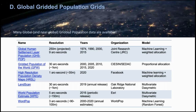Thanks very much. Glad to be here today. I'm going to talk a little bit about the list of global grids you see on the screen here, and we're going to dive a little deeper for each. My name is Greg Yetman — I'm a geographer at CIESIN and have been working with gridded population data since the early 2000s. Here on the screen we have a table showing the different global data sets, and one of the most common questions is: how do I choose which data set to use for my analysis?